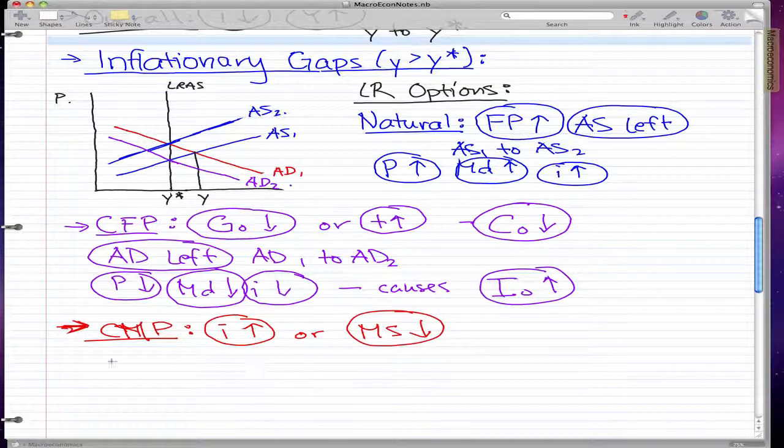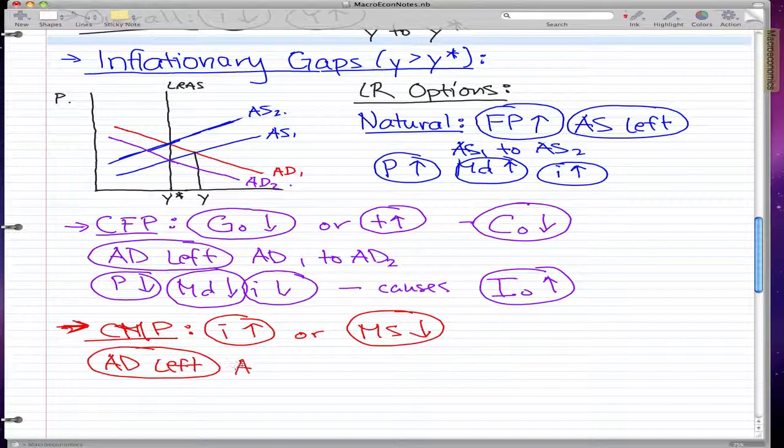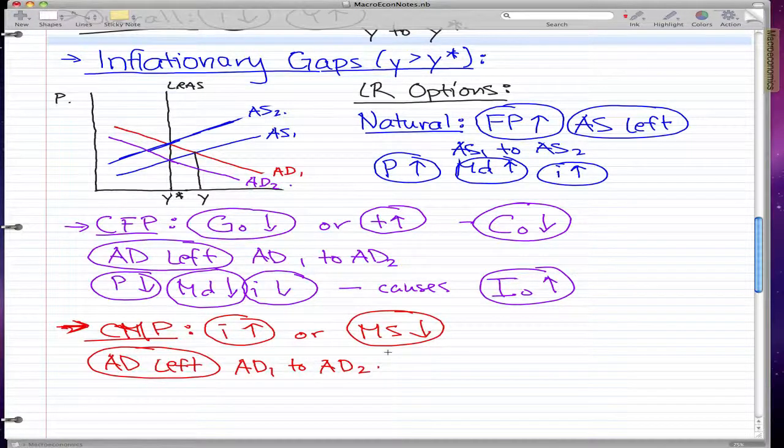This leads to AD left, much the same as our contractionary fiscal policy, moves from AD1 to AD2, which I won't reflect in the graph because we already reflected it with the fiscal policy.